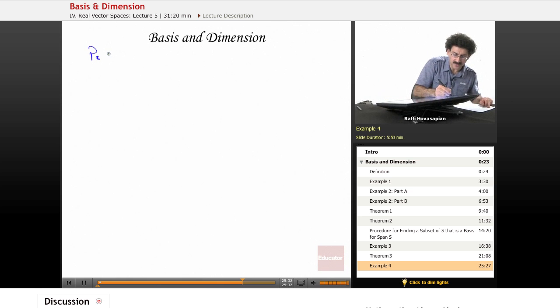P2, which we've used a lot, that is the vector space of all polynomials of degree less than or equal to 2.